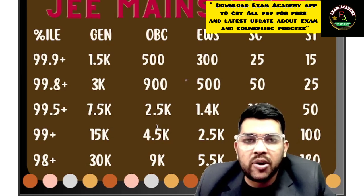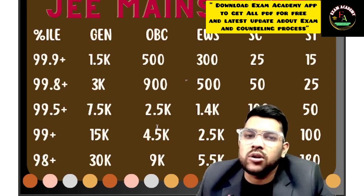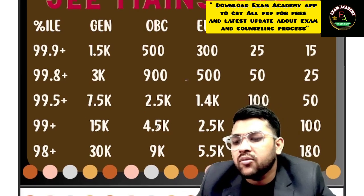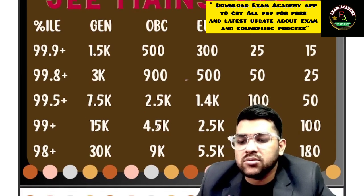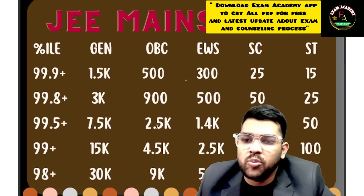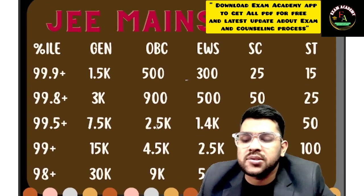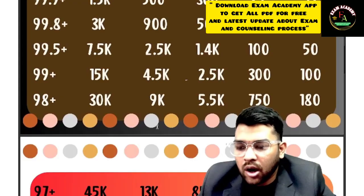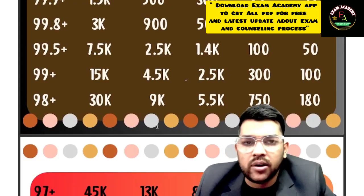For 98 percentile — General: 30,000, OBC: 9,000, EWS: 5,500, SC: 750, ST: 180 (General, OBC, EWS, SC, ST respectively).